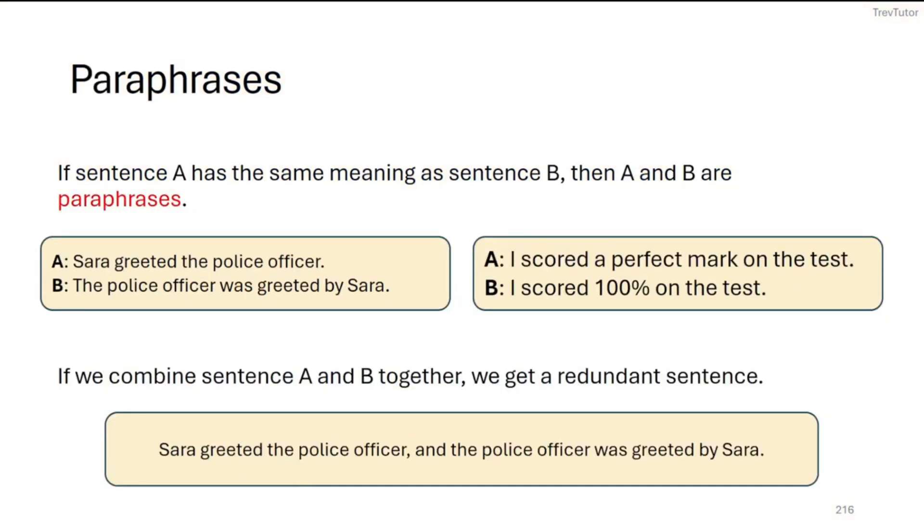So now we can talk about sentence relationships. Those were word relationships before. Now these are sentence relationships. We say if two sentences have the same meaning, then they're paraphrases. So if we say Sarah greeted the police officer versus the police officer was greeted by Sarah, the content and meaning of these sentences are exactly the same. So these are paraphrases.